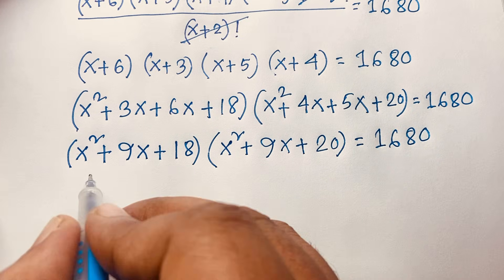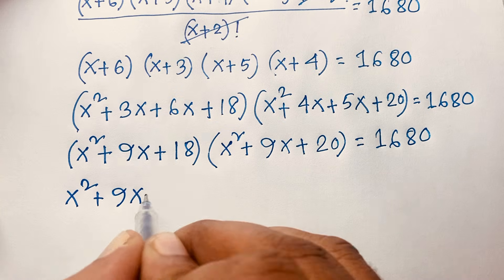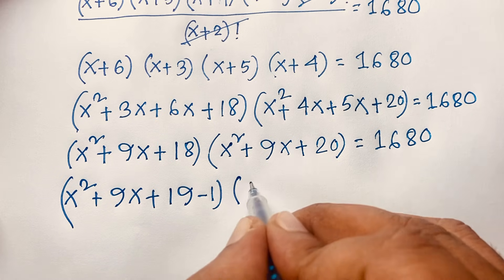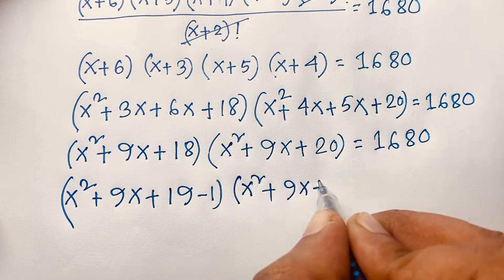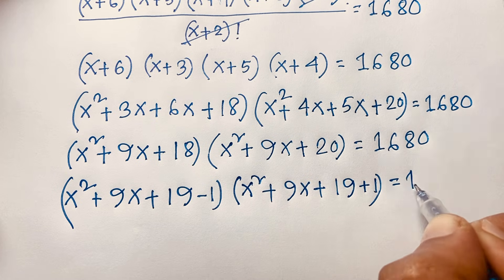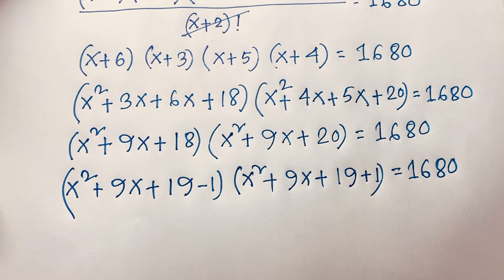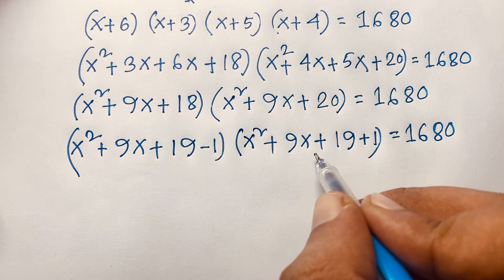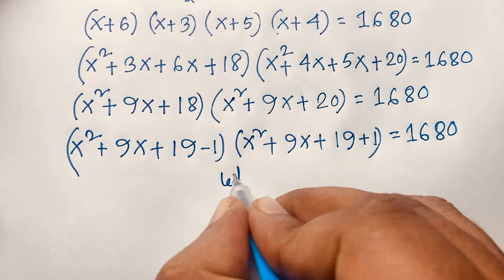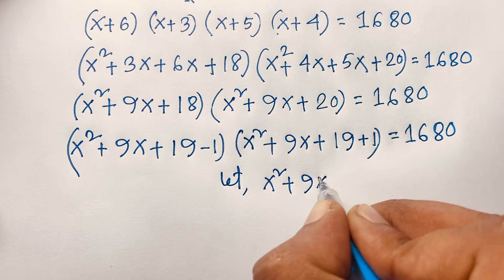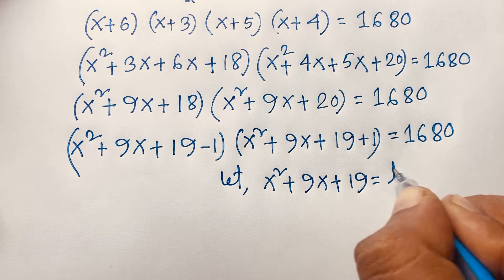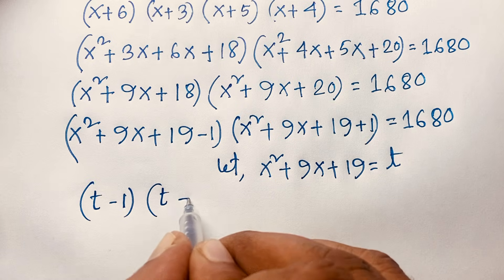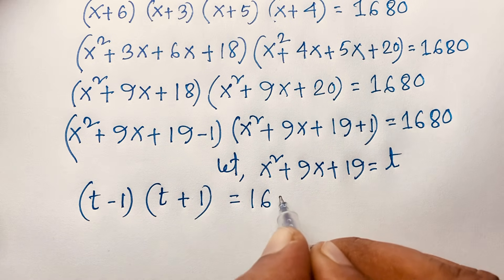Now I can rewrite: (x² + 9x + 19 − 1) times (x² + 9x + 19 + 1) equals 1680. Look — both share the expression x² + 9x + 19, which is the same. So let t = x² + 9x + 19. Then this expression becomes (t − 1) times (t + 1) equals 1680.